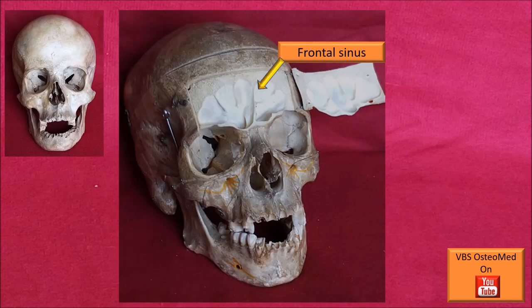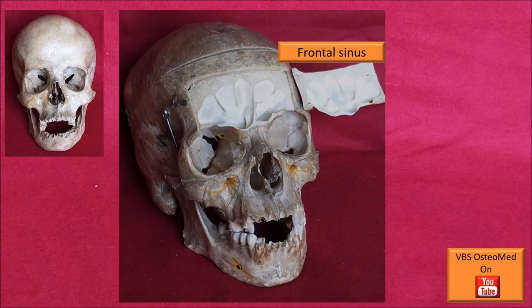The most important item to remember deep inside this skull in Norma Frontalis is the frontal sinus. The outer table of the skull has been removed to show the frontal sinus in full view. You can also note that between the two sinuses on either side, there is an inter-sinus septum between the two.